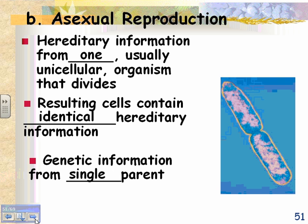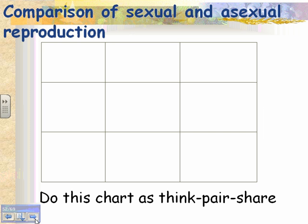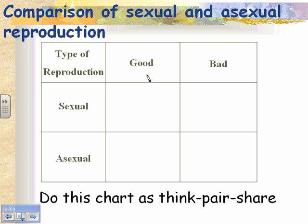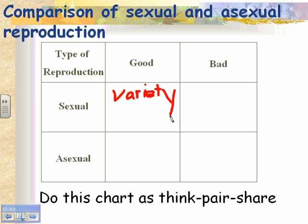Let's compare sexual and asexual reproduction. The type of reproduction can be sexual or asexual, and we can think about the good and bad aspects of each. The good thing about sexual reproduction is that you end up making variety — the babies end up looking different from each other and different from the parents, and they're different in many ways, not just appearance.